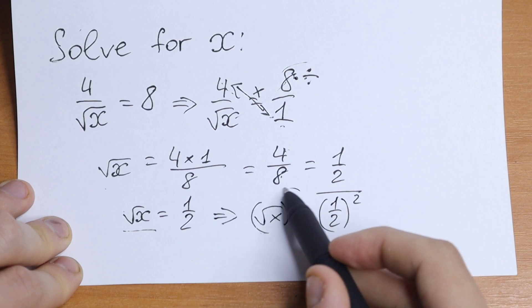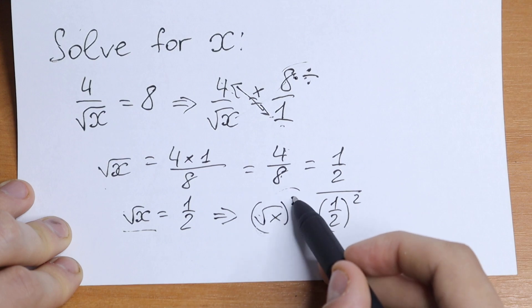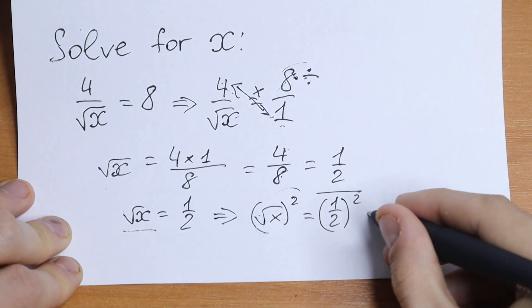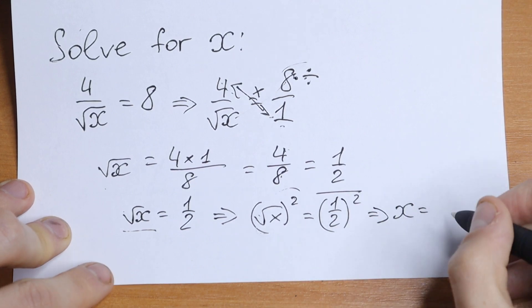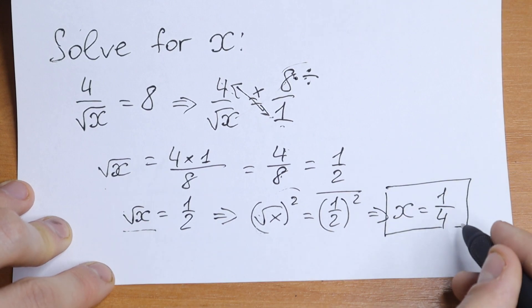As a result we'll have x right here because if we raise square root to the second power we will have only our expression under this square root sign. We will have that our x equal to 1 half times 1 half. It will be 1 fourth and this will be our answer.